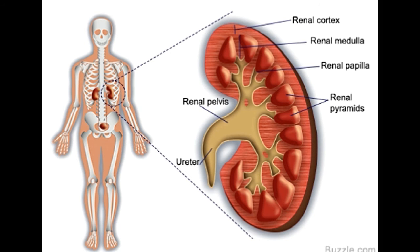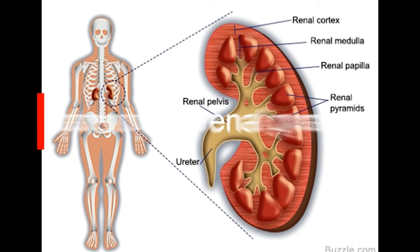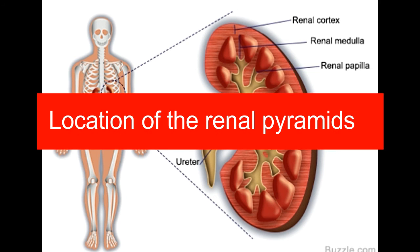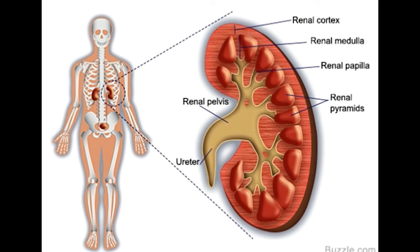Nephrons are found in structures known as renal pyramids, located in the outward curve from the center of the body of either kidney. The location of renal pyramids within the kidneys is shown in the adjoining figure.